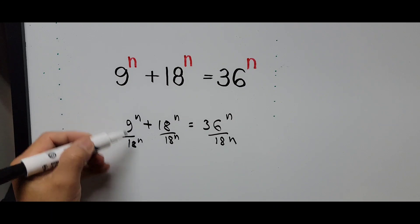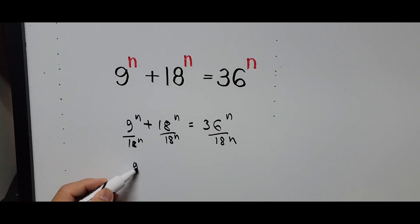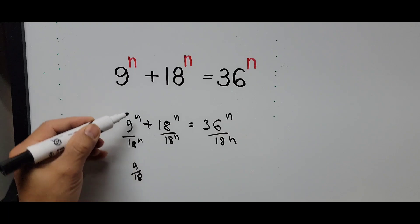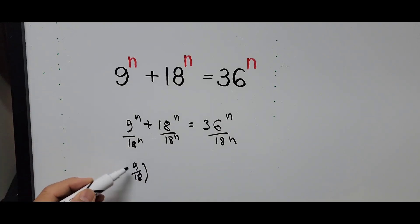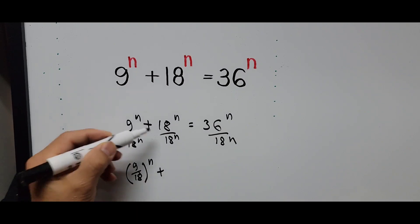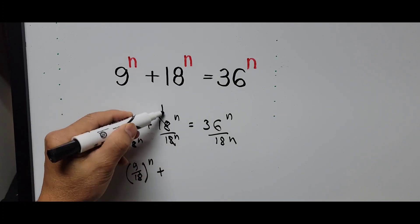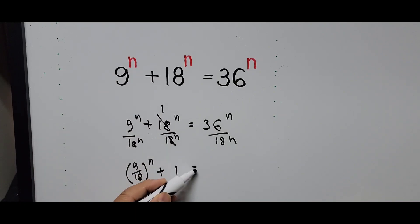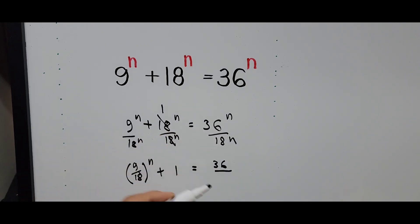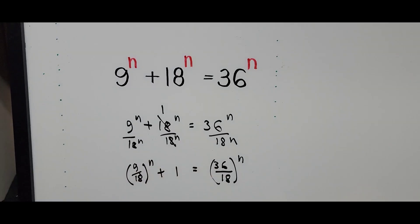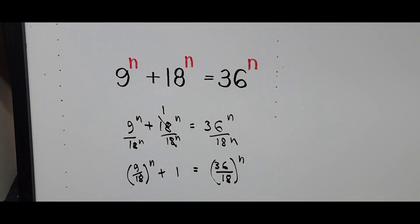The first term becomes 9 divided by 18, raised to the power n. The middle term 18^n divided by 18^n equals 1. And the right side becomes 36 divided by 18, raised to the power n. We follow the exponent rule, putting each ratio in parentheses with exponent n.